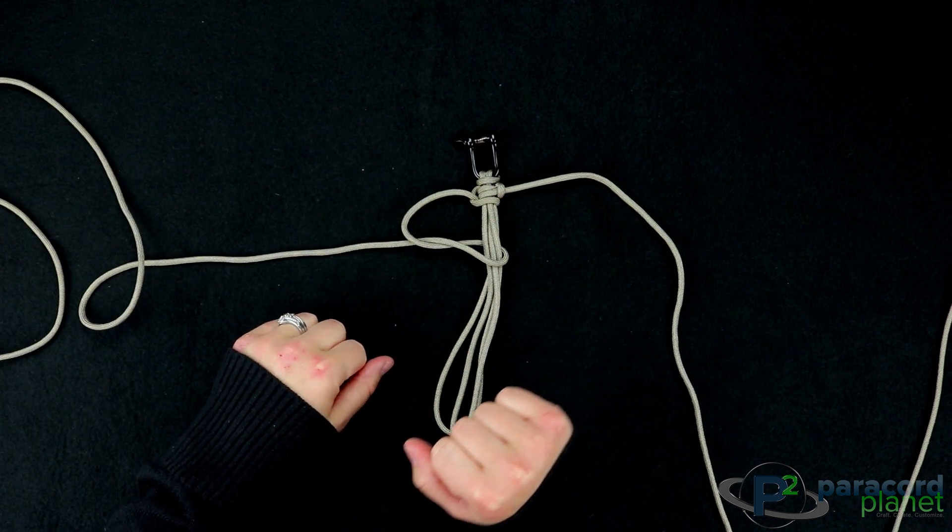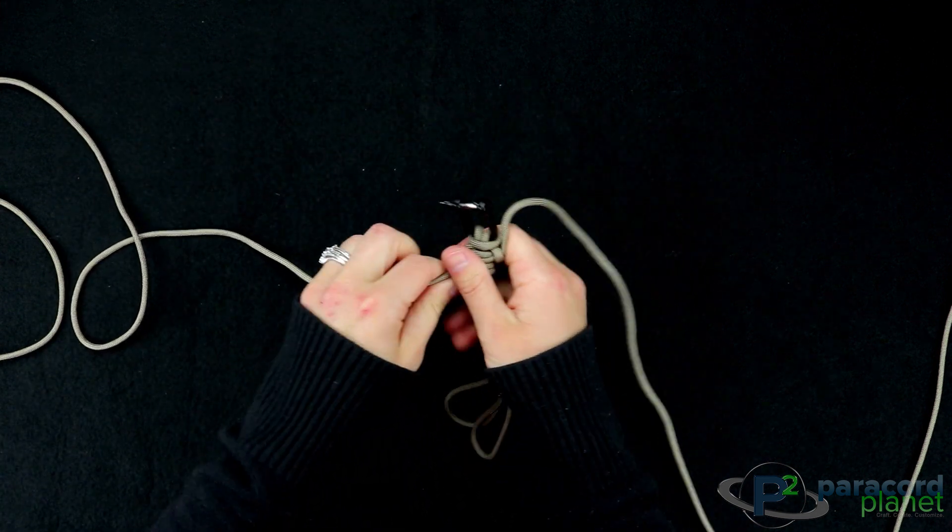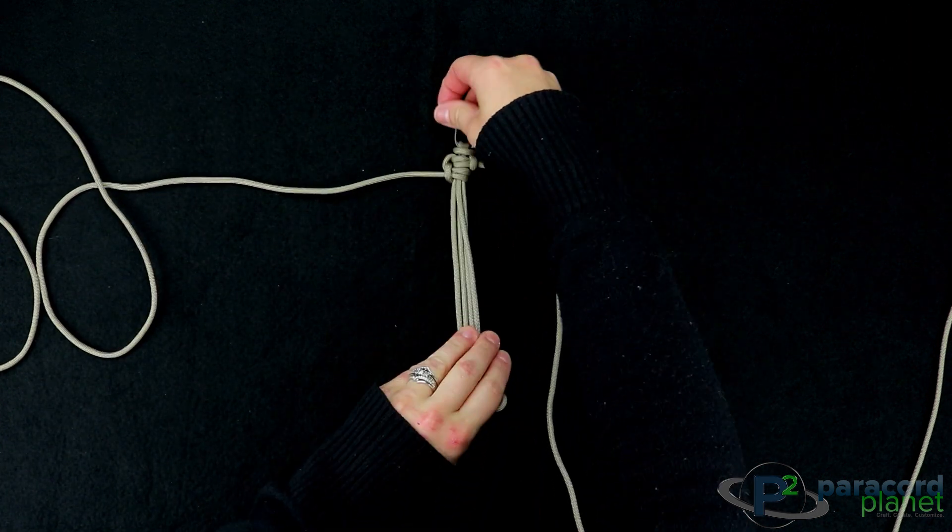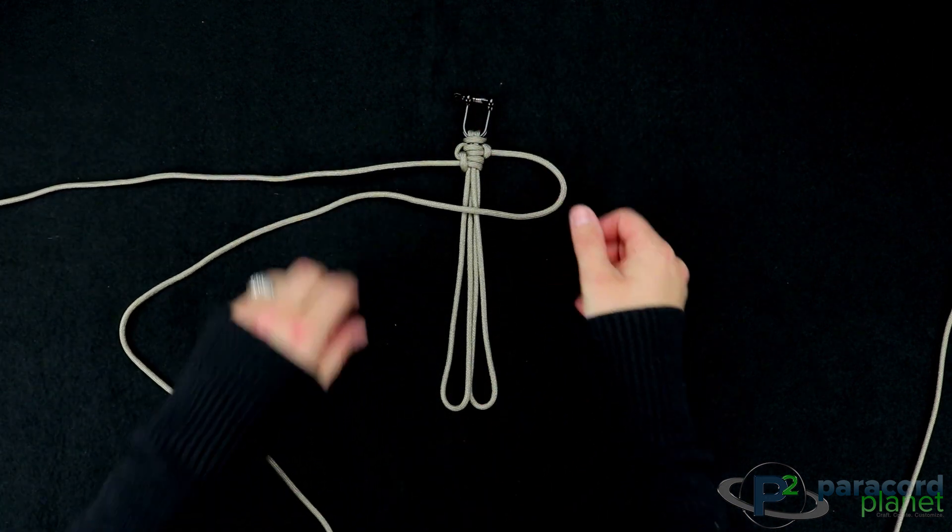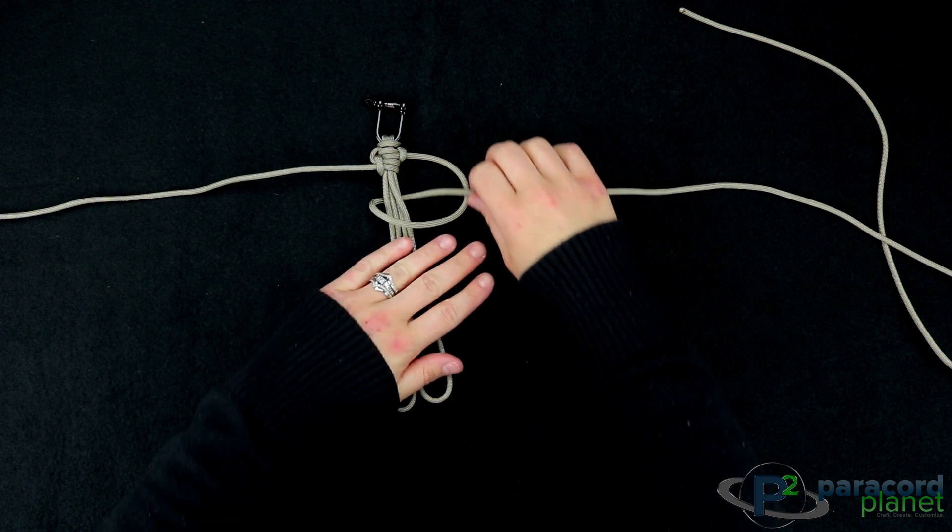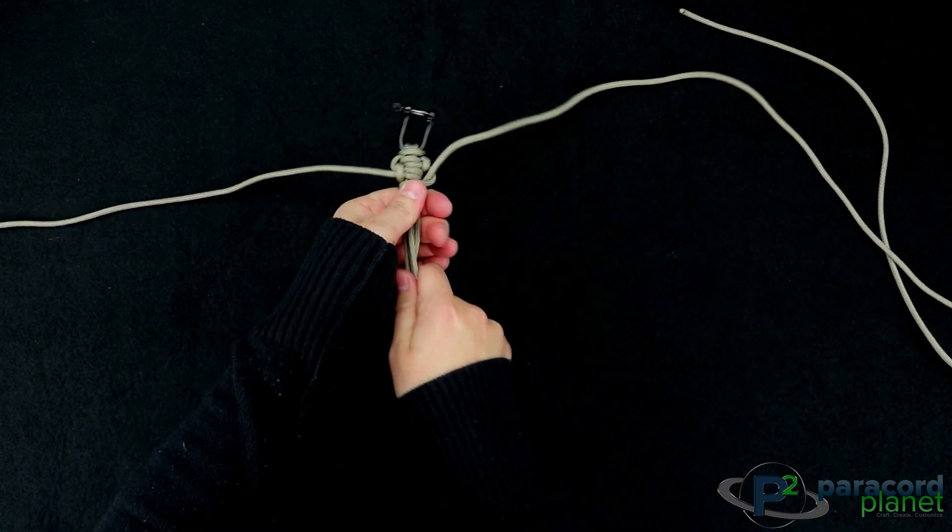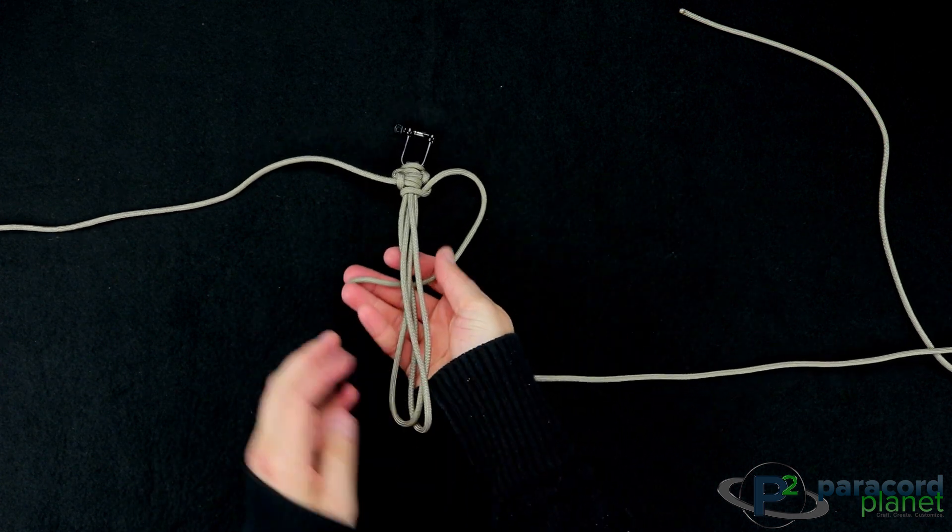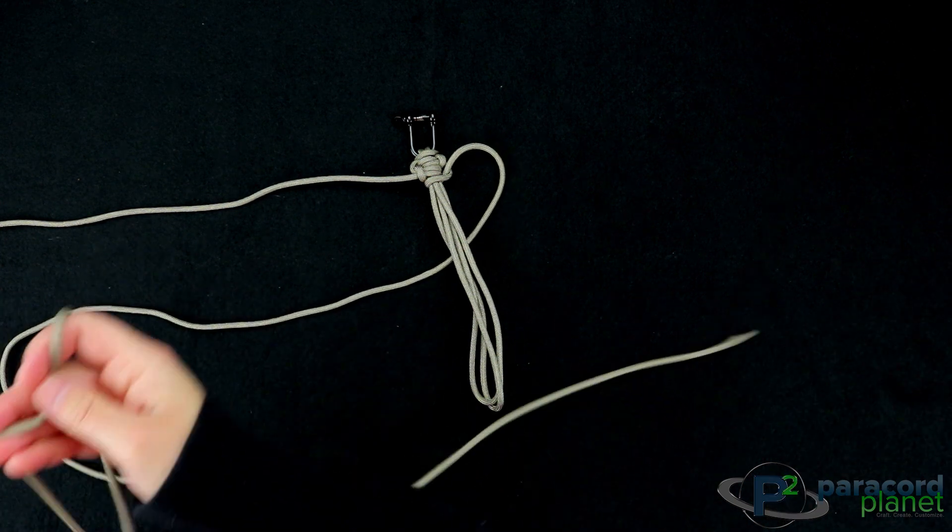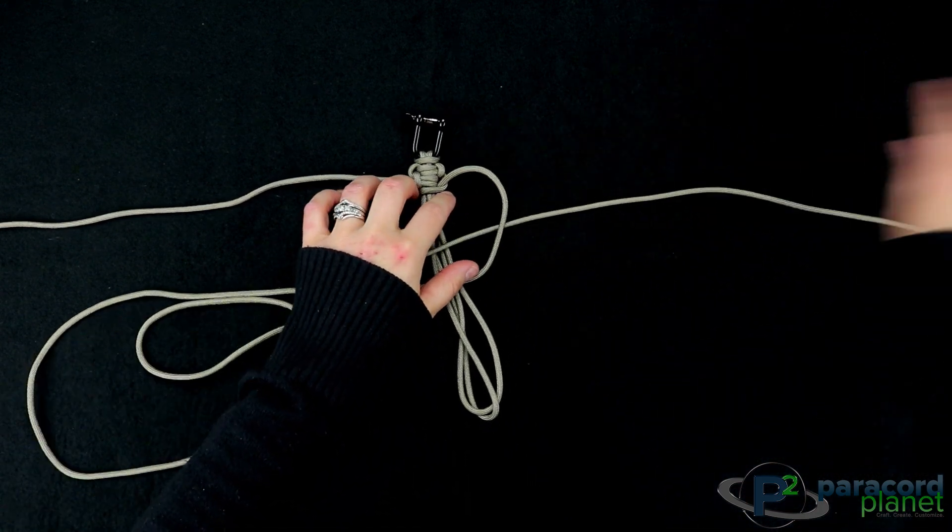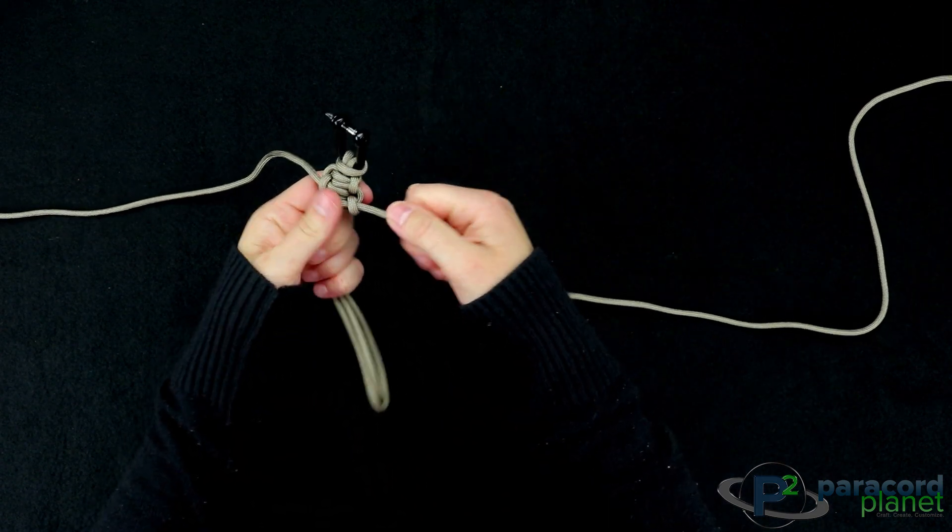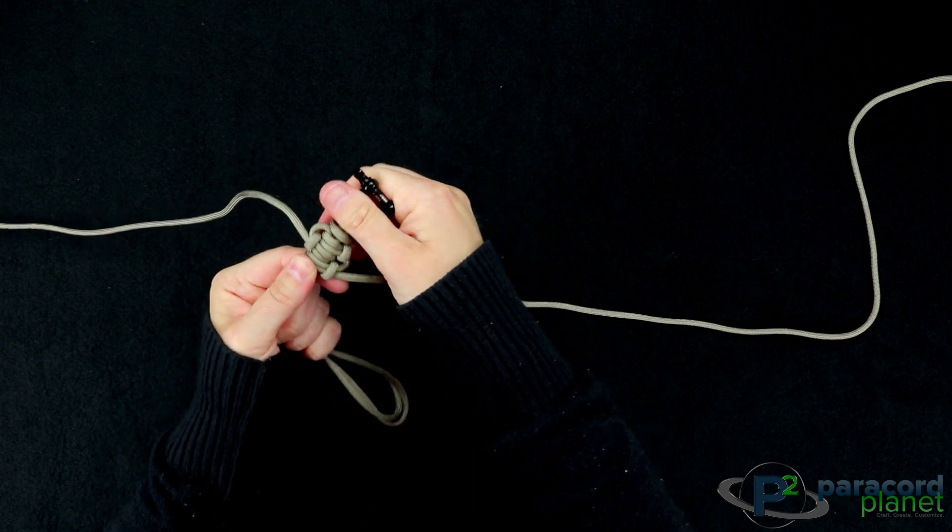Let's do that one more time here and you can really start to see the pattern forming. So you'll go over, up through the loop, pull that tight, push it up as well. Then you'll go under and then down through the loop just like that.